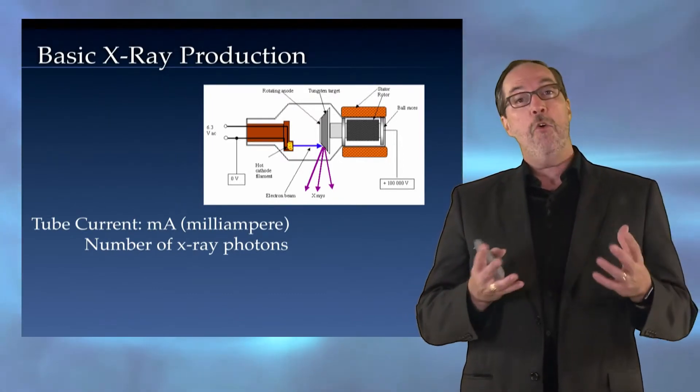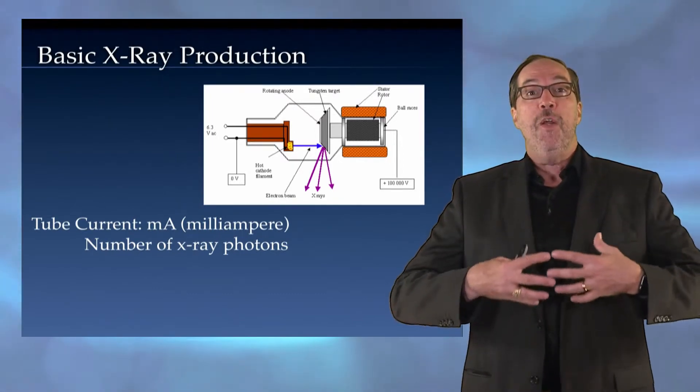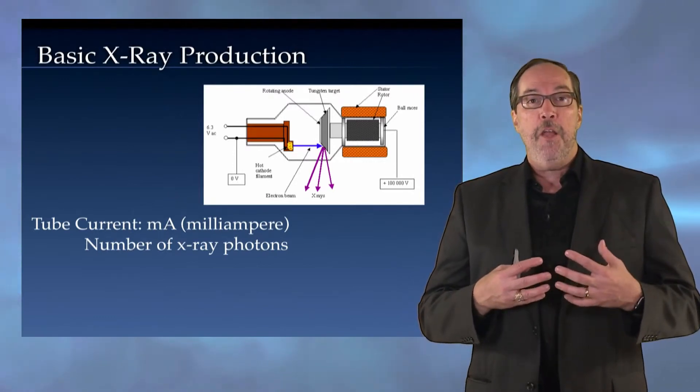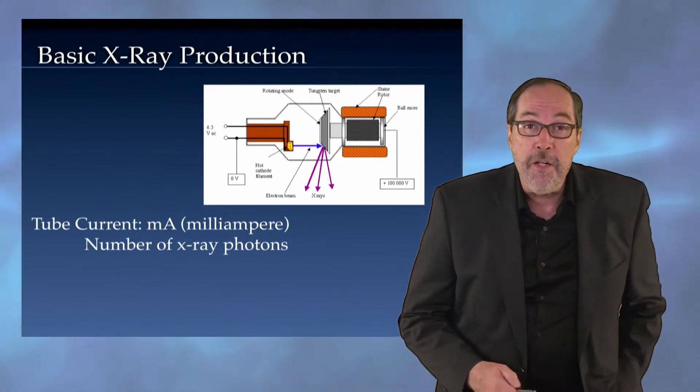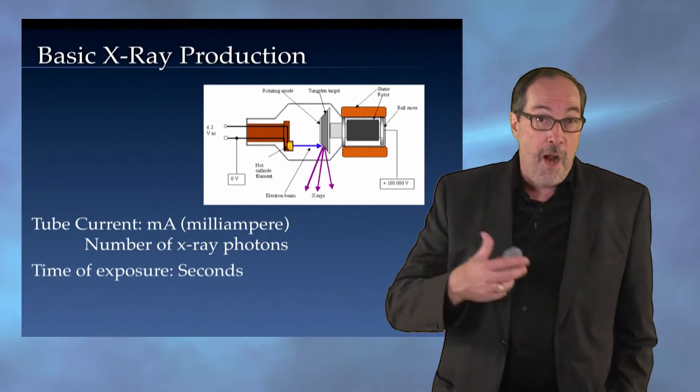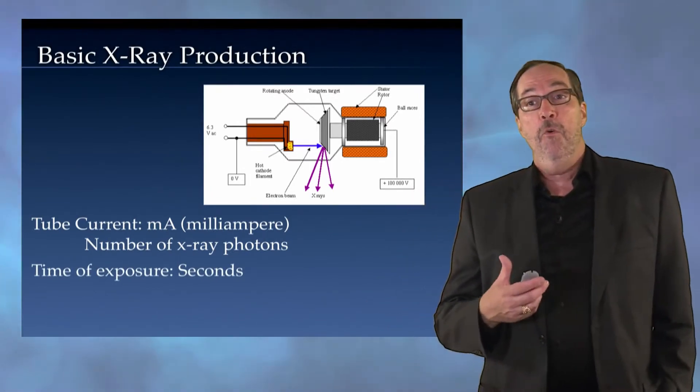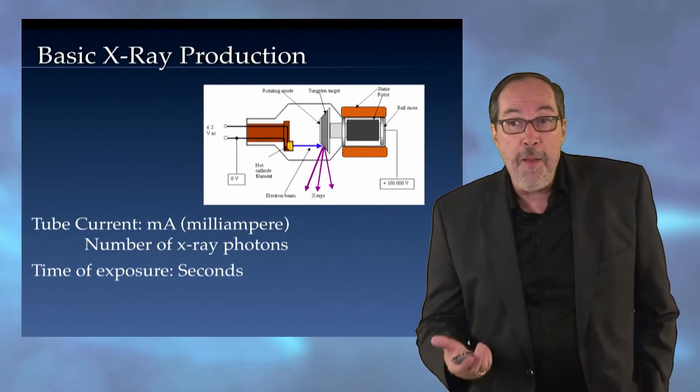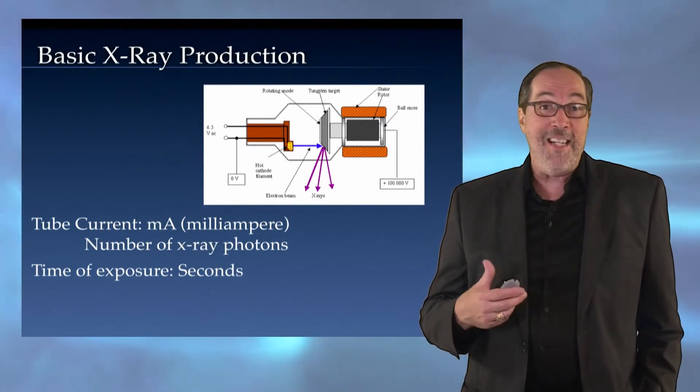So if we increase the mA, we increase the number of X-ray photons being generated by the X-ray tube. We also have a control parameter, an operator-selectable parameter, which is the time of exposure in seconds.